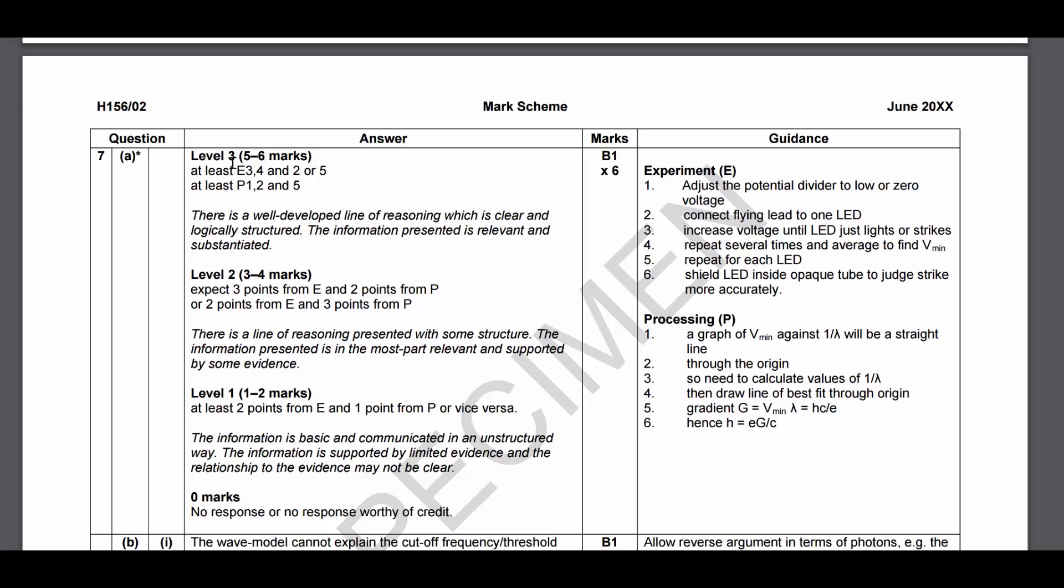Now again, you need at least a few of these points in order to score the maximum marks. So to get a level 3 answer, you'd need to say at least three of these points, and they've specified which ones: at least three of these ones, points 1, 2, and 5. So drawing the graph with a straight line through the origin, which would then allow you to use the gradient. For 3 to 4 marks, it's slightly more flexible: 2 points from 1 and 3 from the other. It doesn't matter which ones.